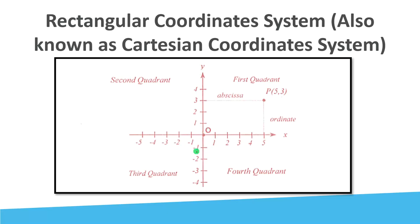The Cartesian plane is divided into four parts by the x and y axes. These parts are called quadrants: the first quadrant is upper right, the second quadrant is upper left, the third quadrant is lower left, and the fourth quadrant is lower right.